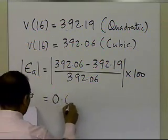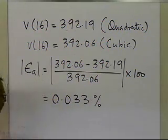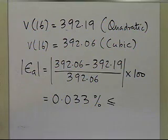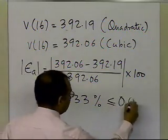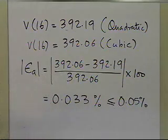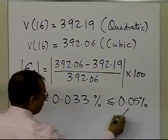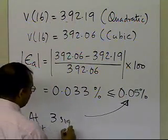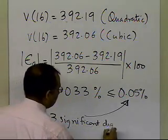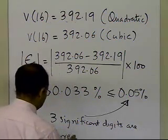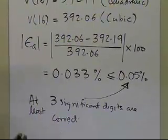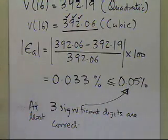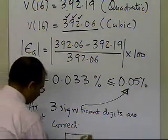This value of 0.033 percent is less than 5%, less than 0.5%, and less than 0.05%, but not less than 0.005%. So this tells me that at least three significant digits are correct. In the number 392.06, I can trust the 3, the 9, and the 2 — those are the three significant digits I can trust in that solution. And that's the end of this segment.